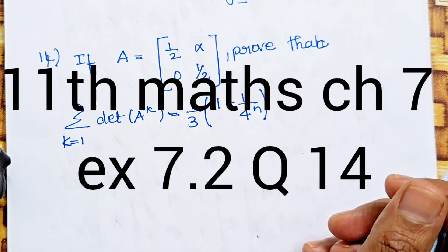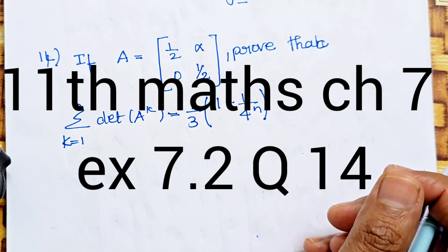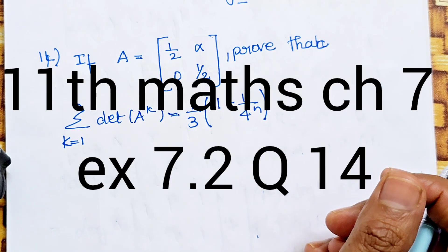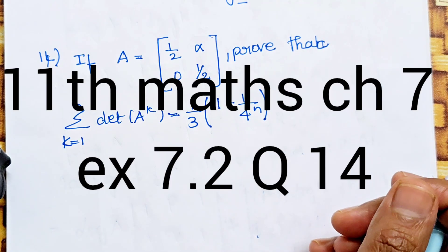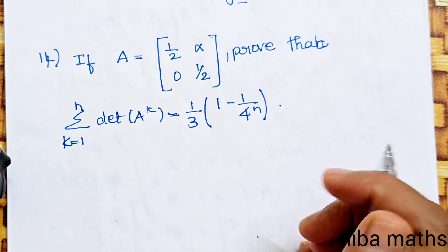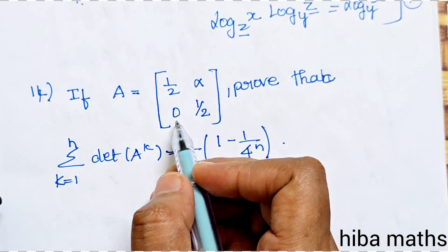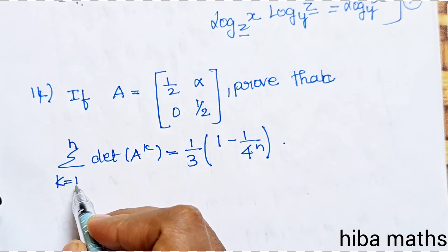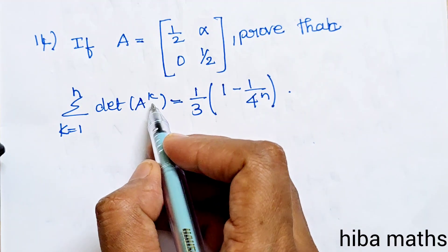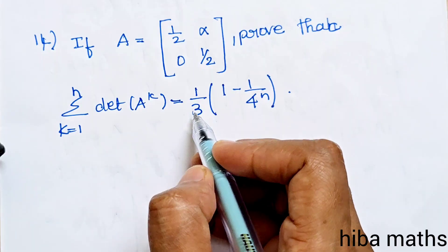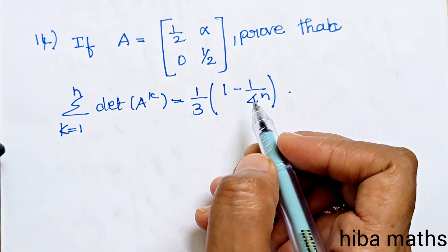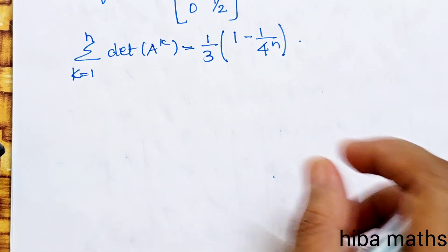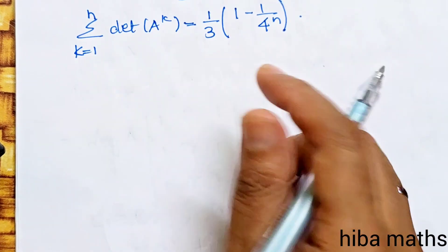Hello students, welcome to Hypermax 11th standard. This is Chapter 7: Matrices and Determinants, Exercise 7.2, 14th question, episode 100. Given that A equals [[1/2, α], [0, 1/2]], prove that the summation from k=1 to n of determinant of A^k equals (1/3)(1 - (1/4)^n).